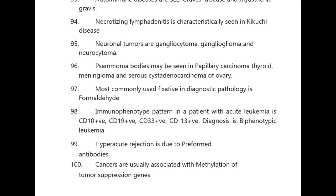Hyperacute rejection is due to preformed antibodies. Cancers are usually associated with methylation of tumor suppressor genes. This completes rapid revision pathology series 1; please complete all 19 subjects in the rapid revision series.